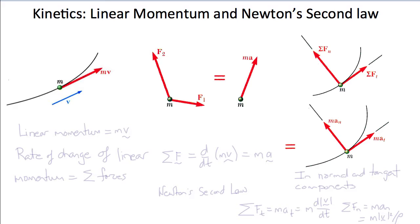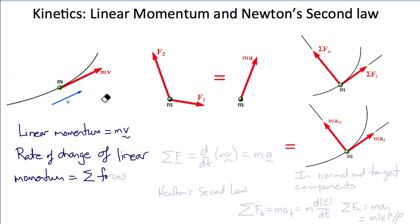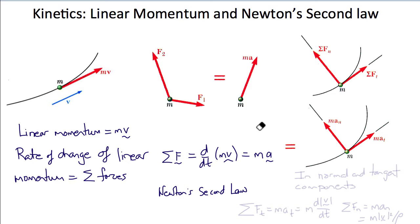This brings us to kinetics. Unlike statics, which only requires Newton's first and third laws, in dynamics we need Newton's second law. Recall that the linear momentum of a particle with mass m and velocity v is mv, and Newton's second law states that the rate of change of linear momentum equals the sum of the external forces, giving ΣF = d/dt(mv). Since the mass is constant, this is mass times acceleration — Newton's second law. The sum of the external forces f₁ and f₂ equals mass times acceleration a.